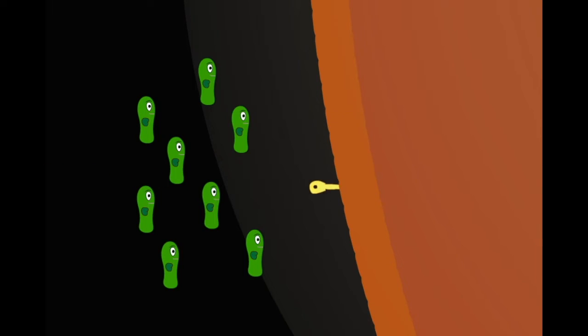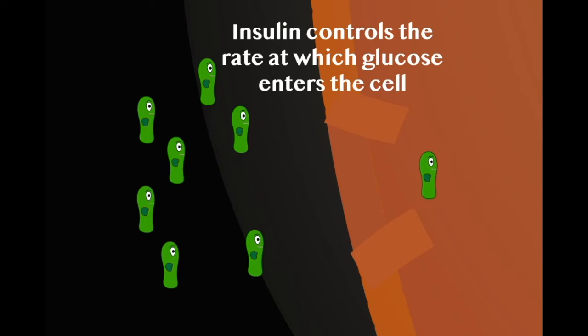Insulin therefore controls the uptake of glucose from the blood, ensuring that there is a steady fuel supply for the cell and that the glucose is not used up too quickly.